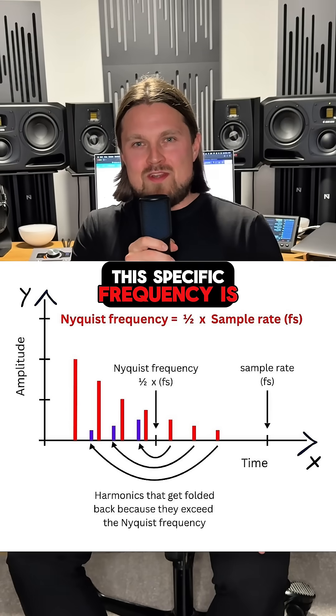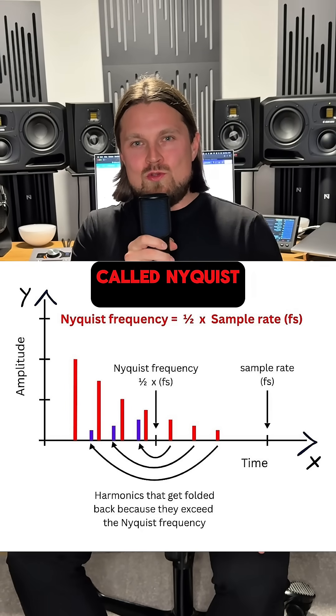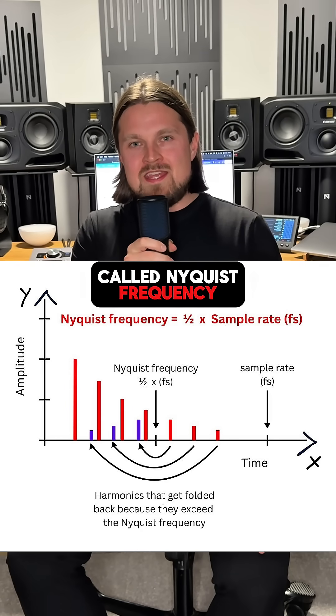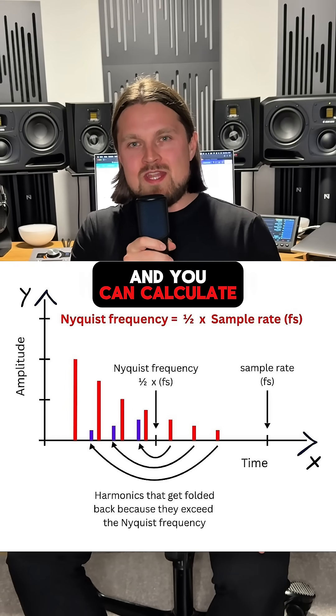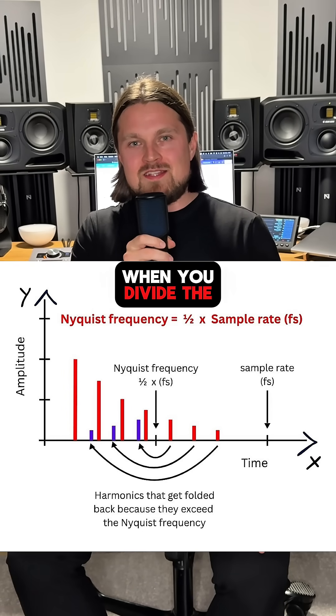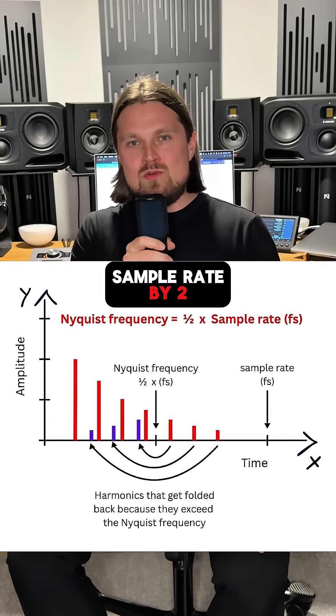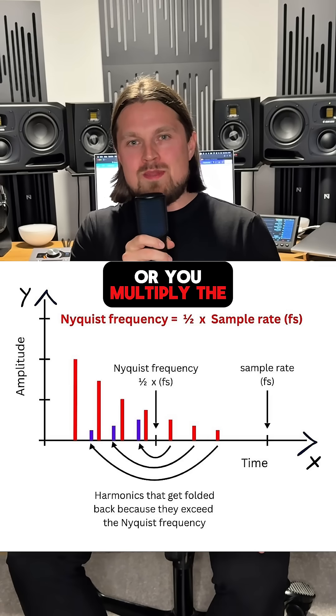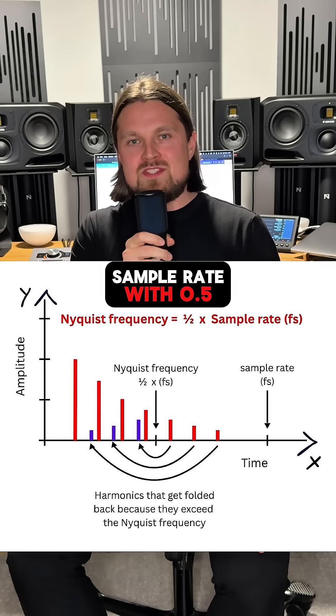This specific frequency is called the Nyquist frequency, and you can calculate it when you divide the sample rate by 2, or you multiply the sample rate by 0.5.